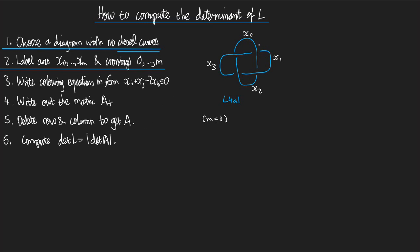And let's label the crossings. Let's label them 0, 1, 2, 3. Do you notice something? There's as many arcs as there are crossings, right? We've labeled the arcs X0 up to X3 and the crossings 0 up to 3.